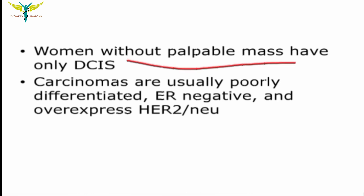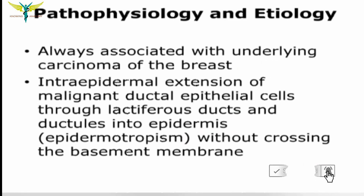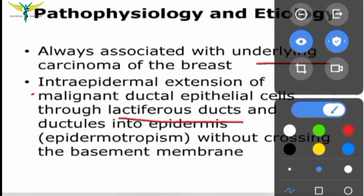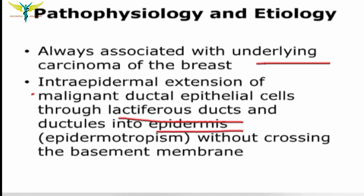Women without a palpable mass have only DCIS, and the carcinomas are usually poorly differentiated, with estrogen receptor negative status and overexpression of the HER2 gene. Paget's disease is always associated with underlying carcinoma of the breast, in which the intraepidermal extension of malignant ductal epithelial cells passes through the lactiferous ducts and opens into the epidermis without crossing the basement membrane.